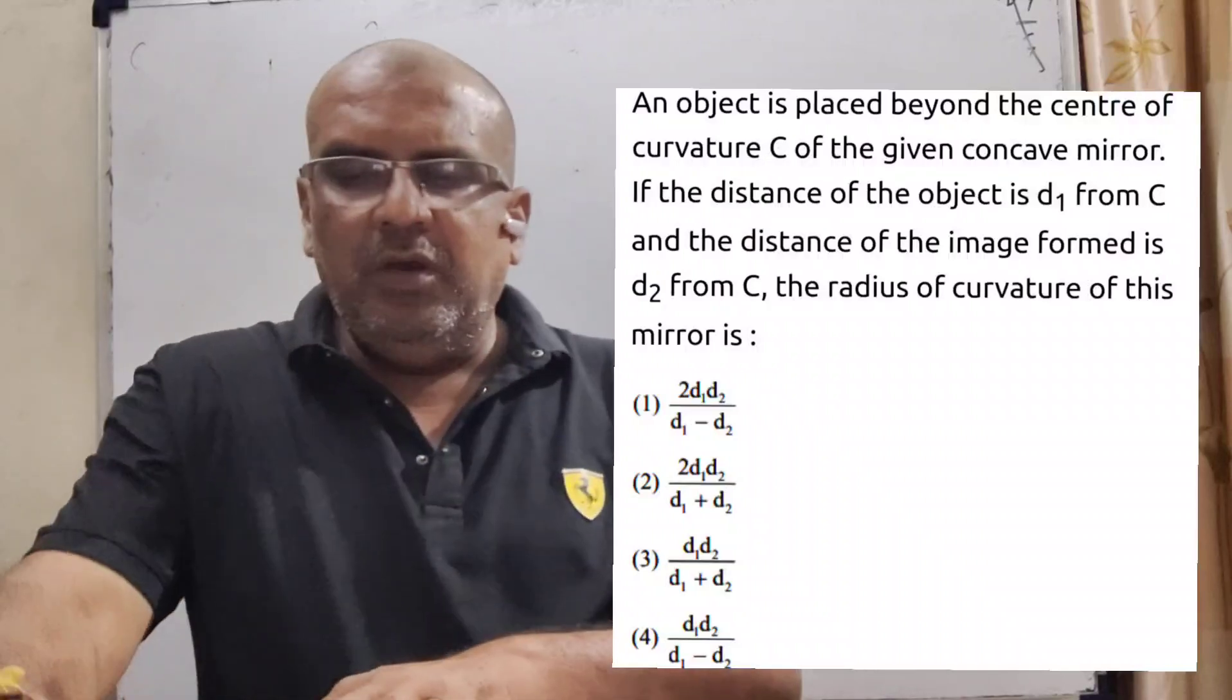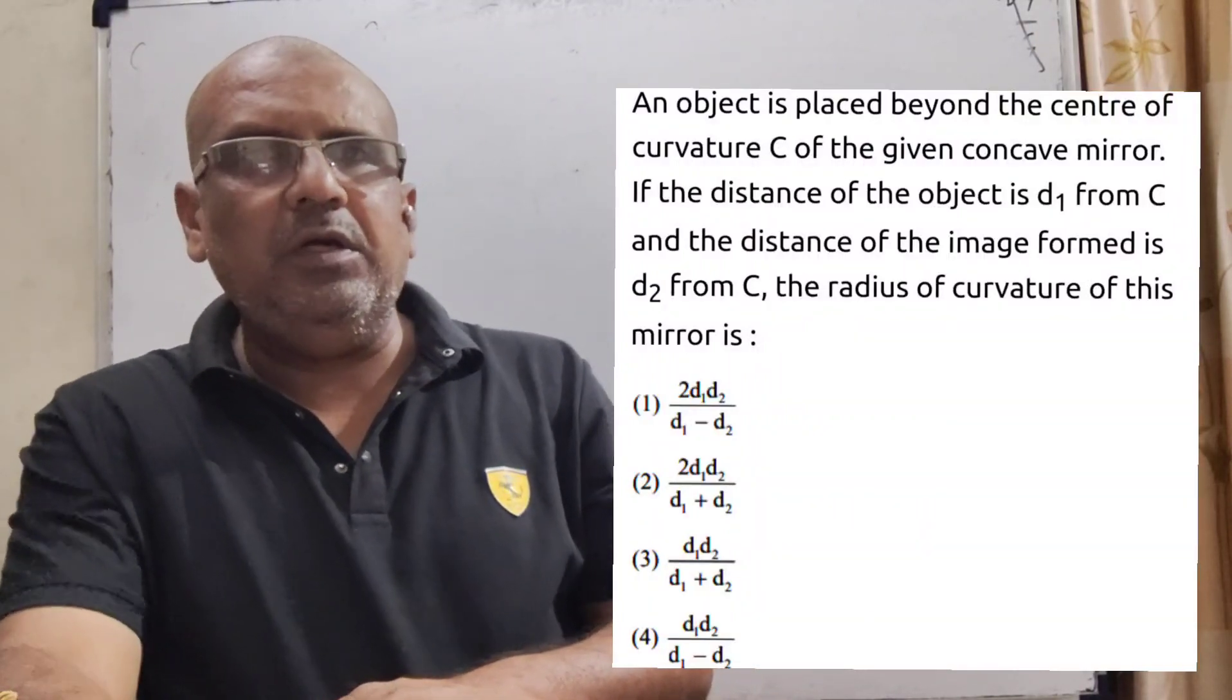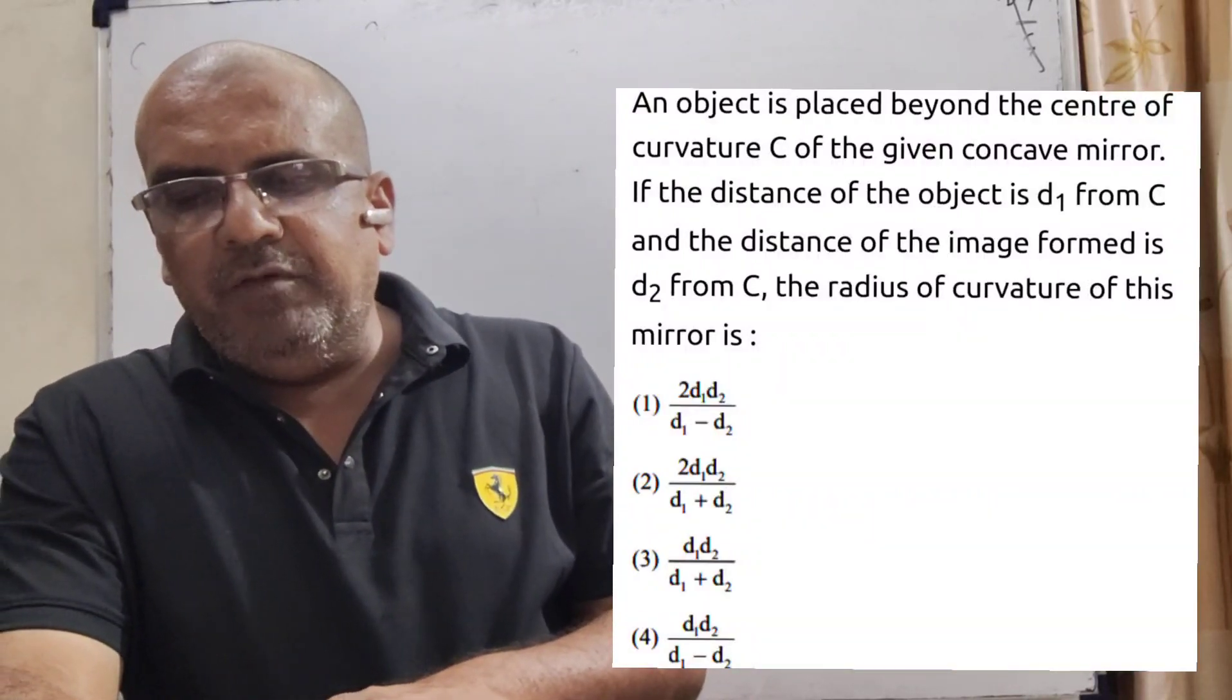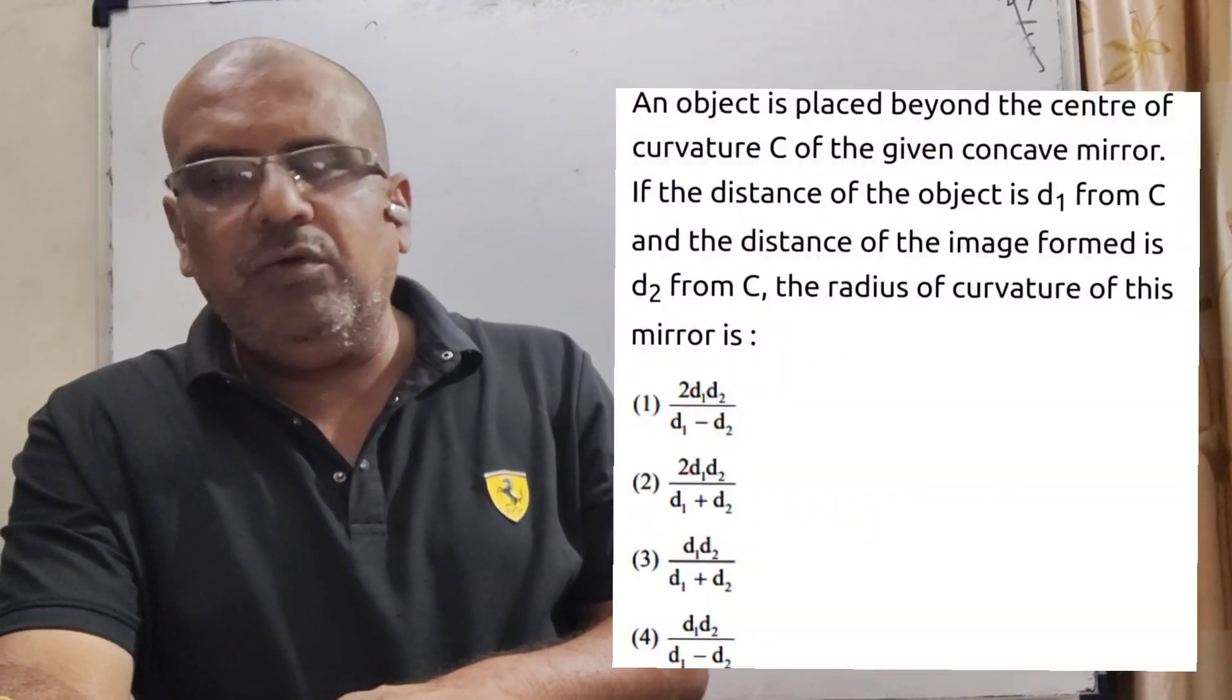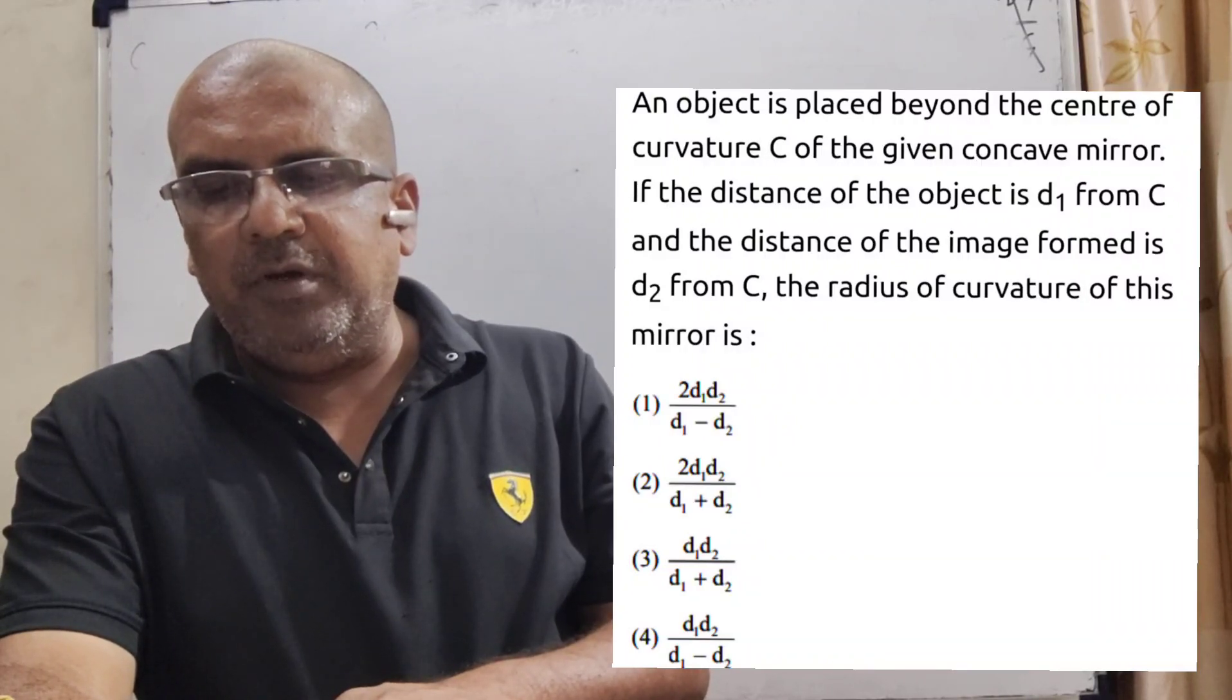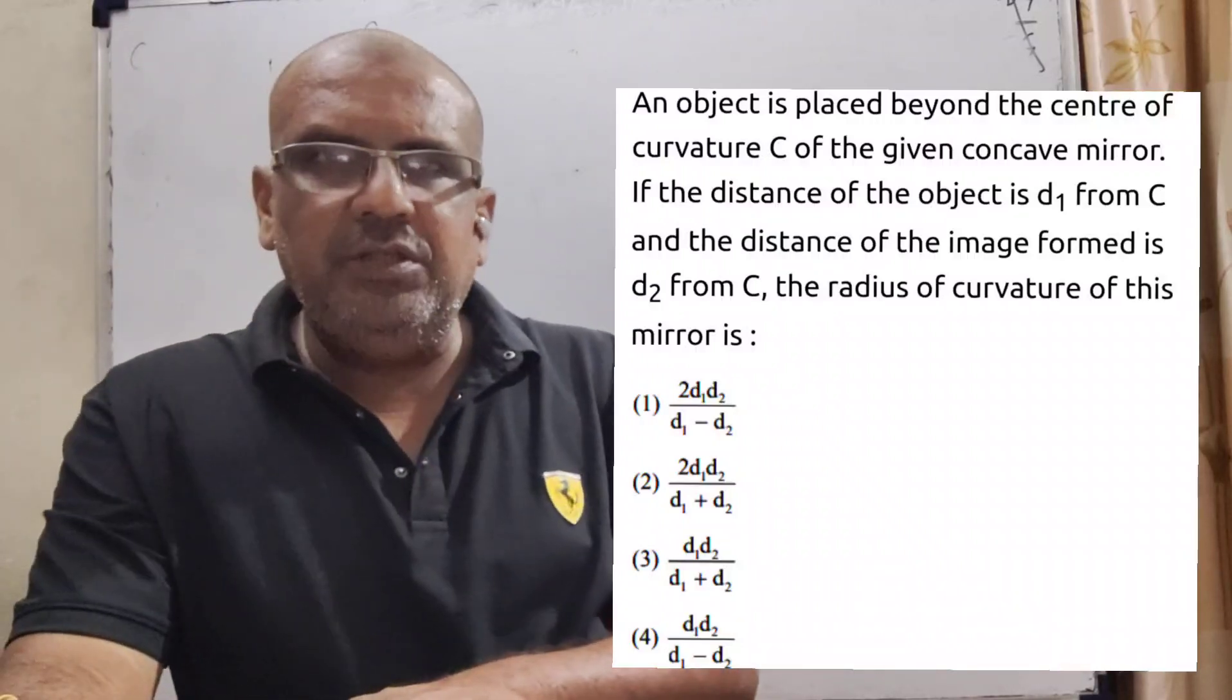Here we have given four options. Option A: 2d1d2 upon d1 minus d2, all d's in small letters. Option B: 2d1d2 upon d1 plus d2. Option C: d1d2 upon d1 plus d2. And option D: d1d2 upon d1 minus d2. This question is asked JEE Mains 2021.